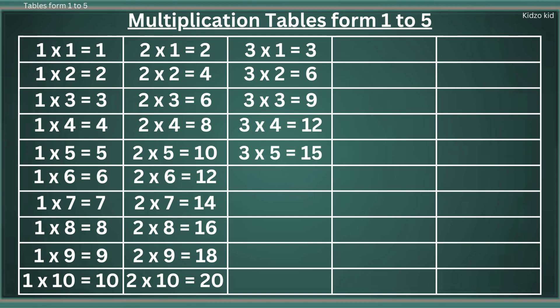3 6s are 18, 3 7s are 21, 3 8s are 24, 3 9s are 27, 3 10s are 30.